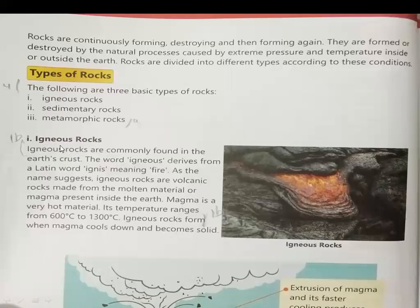Today let's discuss igneous rocks. Igneous means fire. The word igneous comes from a Latin word meaning fire. As the name suggests, igneous rocks are volcanic rocks made from molten material or magma present inside the Earth. Inside the Earth, it is called magma. It is very warm, like fire. Magma is a very hot material — its temperature ranges from 600 degrees centigrade to 1300 degrees centigrade. Igneous rocks form when magma cools down and becomes solid. When magma comes out from the top, it is called lava, and it forms igneous rock.